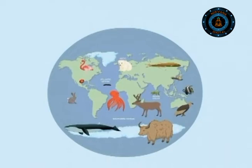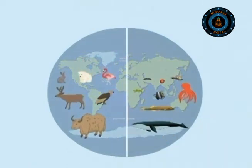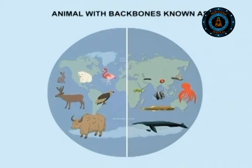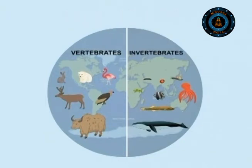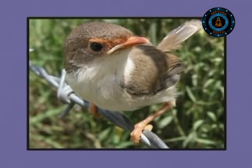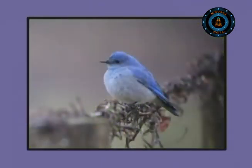Animals of the living world have been divided into two major categories. One is the animals with backbones, known as the vertebrates, and the other is the animals without backbones, called the invertebrates. Other than these two major categories, there are other types too that are unrelated.